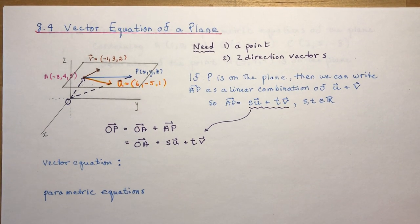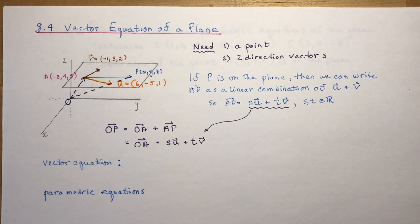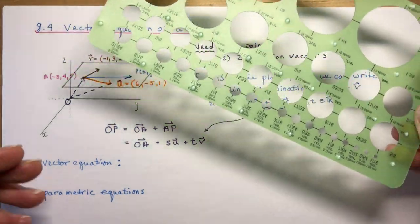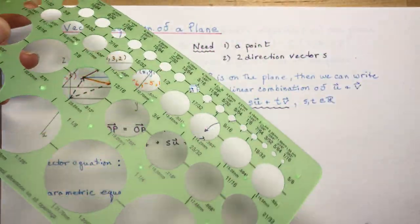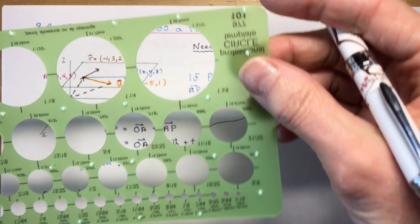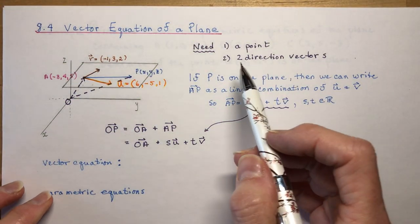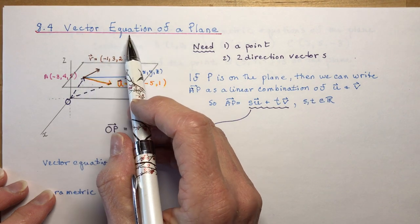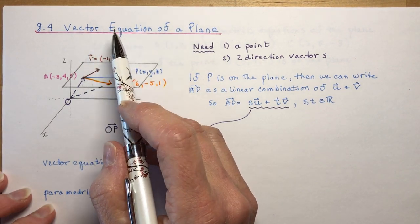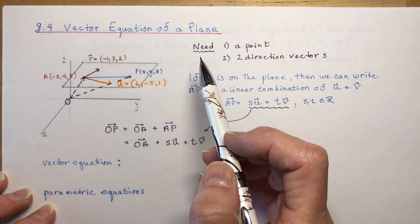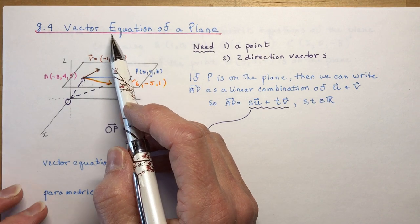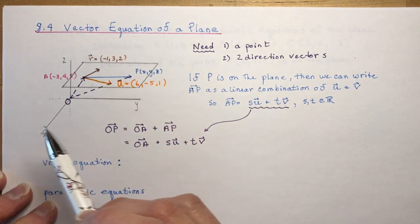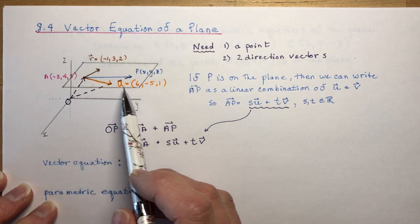Section 8.4: Vector Equation of a Plane. We've moved on from lines to planes. Think of a plane as like a sheet of paper - you could turn it in any direction in space, and there's an infinite number of planes. To define a plane with the vector equation, we need specific components. The next lesson will be the Cartesian equation. The vector equation writes in terms of vectors, and the Cartesian in terms of A, B, C, and D.